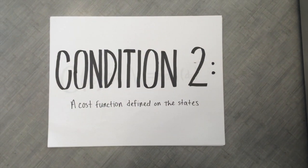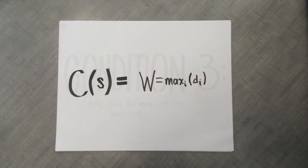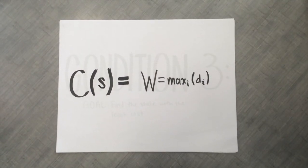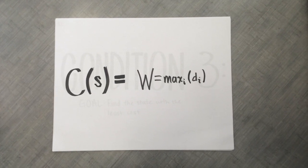Condition 2. The cost function C is defined on the state S as the maximum distance from a demand point to a center.